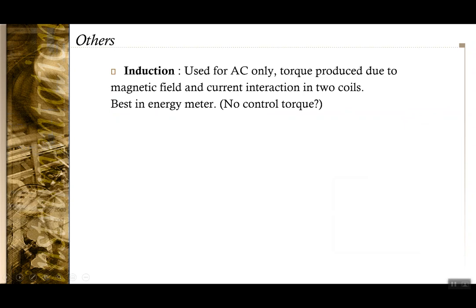The induction type instrument is generally used only for AC measurement, where torque is produced due to interaction of fields and currents in two different coils. They are best used as energy meters and are integrating-type instruments — you're interested in the integral of the measurement, not the instantaneous value. The number of revolutions gives energy output, and they can also measure power, though utility in that case is limited.